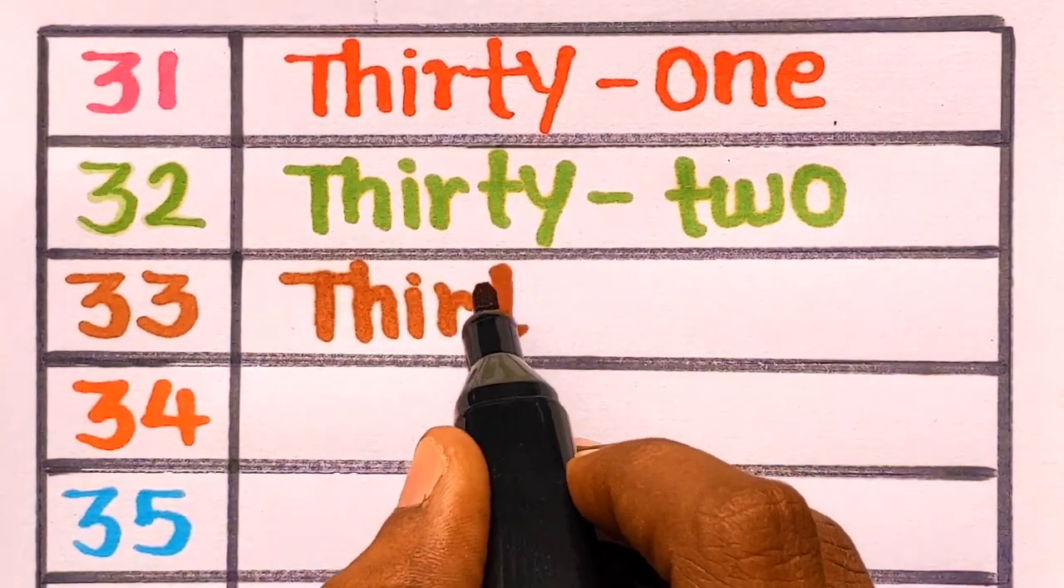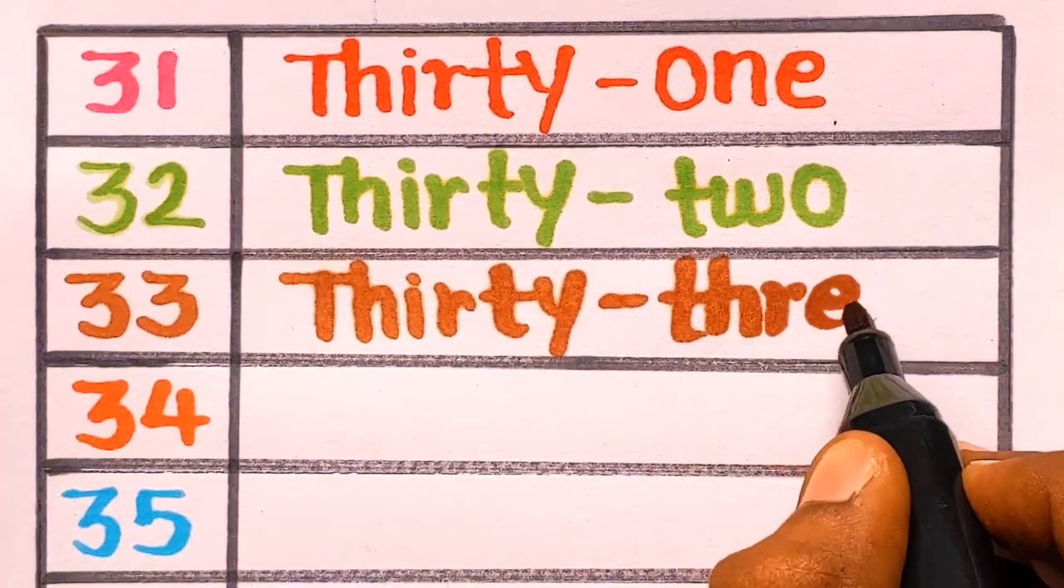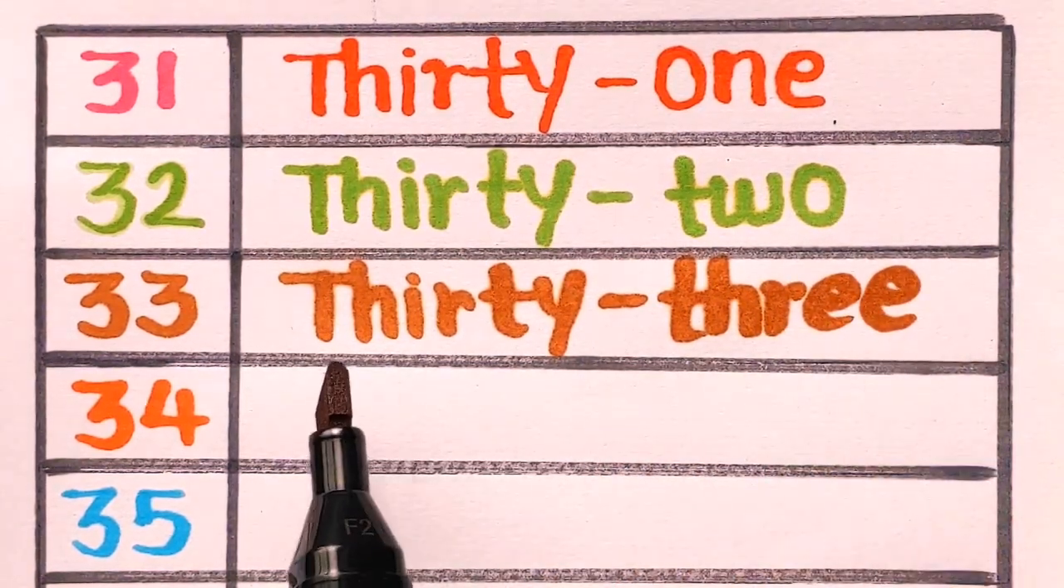Next is 33. T-H-I-R-T-Y, thirty. T-H-R-double-E, three. 33, thirty-three with a brown color.